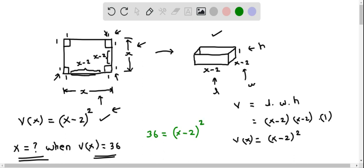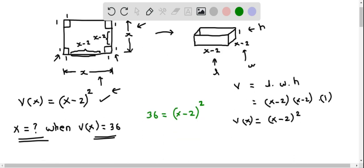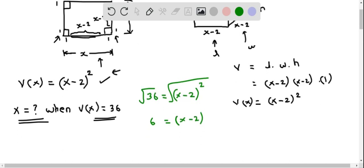Now to determine the x, we have to take square root on both sides. So I take the square root, and the square root of 36 is 6, and square root of (x-2) squared will be x-2. Now we can solve for x by adding 2 on both sides. So this will be 6 plus 2 equal to x.